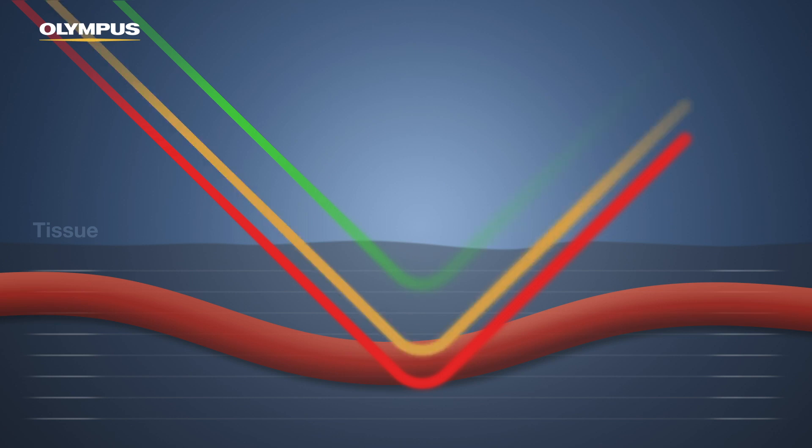If a deep blood vessel is present, amber light is strongly absorbed. The vessel appears darker and is therefore more visible.